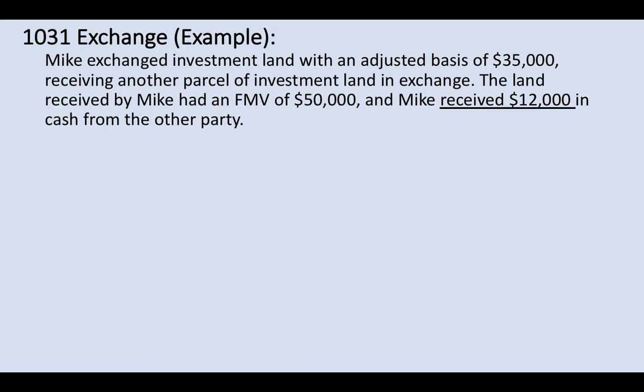In the first example, Mike exchanges investment land with an adjusted basis of $35,000, receiving another parcel of investment land in exchange. The land received by Mike had a fair market value of $50,000, and Mike received $12,000 in cash from the other party.